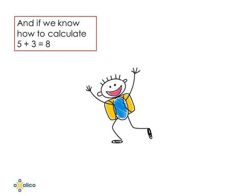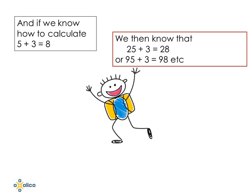Similarly, if we know how to calculate that 5 plus 3 is equal to 8, we immediately know that 25 plus 3 will be 28, and we don't have to do any work to discover that 95 plus 3 is 98.